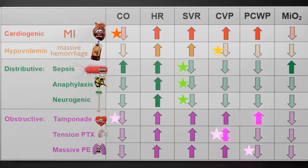In tension pneumothorax, there's pathology with the lungs which leads to squashing of the preload. Therefore, there will not be enough preload in the heart, reducing cardiac output. The parameter to focus on is CVP, which in this condition will be reduced because blood is not properly making its way back to the heart.